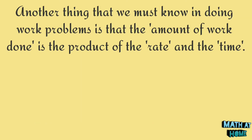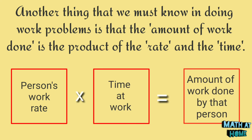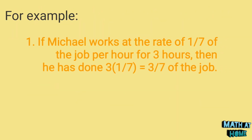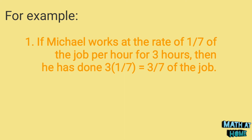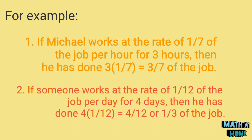Another thing we must know in doing work problems is that the amount of work done is the product of the rate and the time. That is, a person's work rate times time at work equals amount of work done by that person. For example, if Michael works at the rate of 1/7 of the job per hour for 3 hours, then he has done 3 × 1/7 = 3/7 of the job. If someone works at the rate of 1/12 of the job per day for 4 days, then he has done 4 × 1/12 = 4/12 or 1/3 of the job.